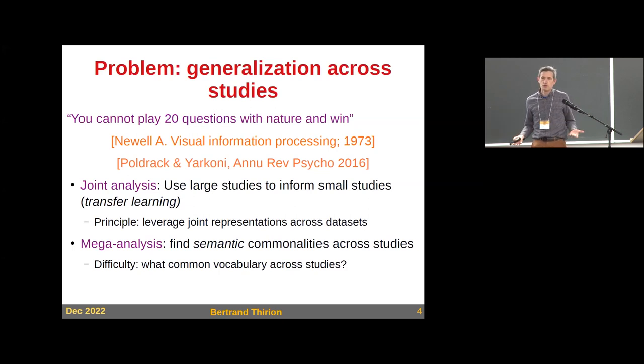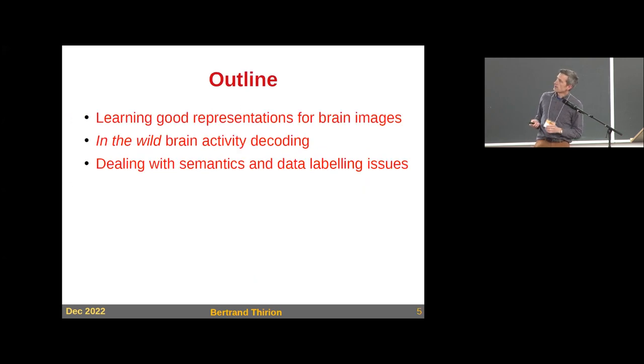How do we meta-analyze all these data? I will present two perspectives: a simpler one based on machine learning, where we integrate all data by leveraging common representations, which is already good. Then we'll go further and try to identify common concepts across studies, first at an image level and then at a conceptual level. I'll discuss common representations across datasets, then wild brain activity decoding, and finally data labeling issues.